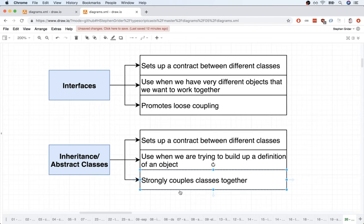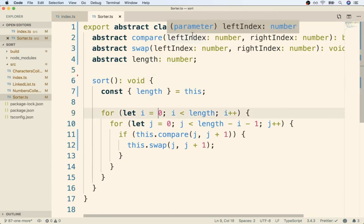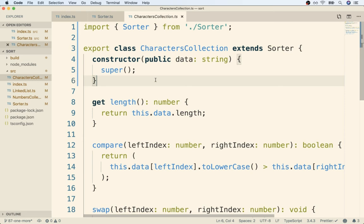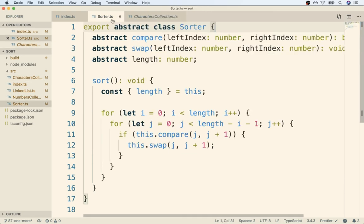So at this point, when we flip back over to it, sorter right here has 100% dependency upon characters collection and numbers and linked list. These child classes right here can't function correctly without the sorter. And likewise, the sorter by itself is pointless without those child classes.